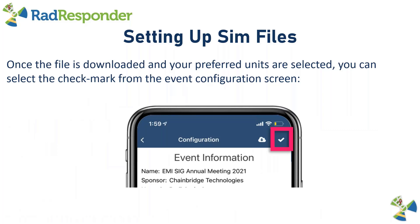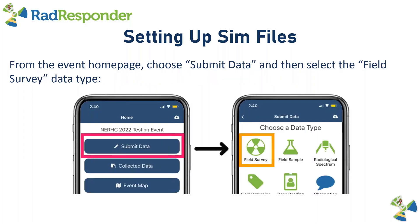Once your file is downloaded and you've selected your preferred units, select the checkmark at the top of your event configuration screen and your simulation is all set up. Now from your event homepage, it's time to submit those simulated readings. Select Submit Data, and then select the Field Survey data type. Right now we only have radiological simulations available for field surveys, so you won't see any simulation UI on the other data types.